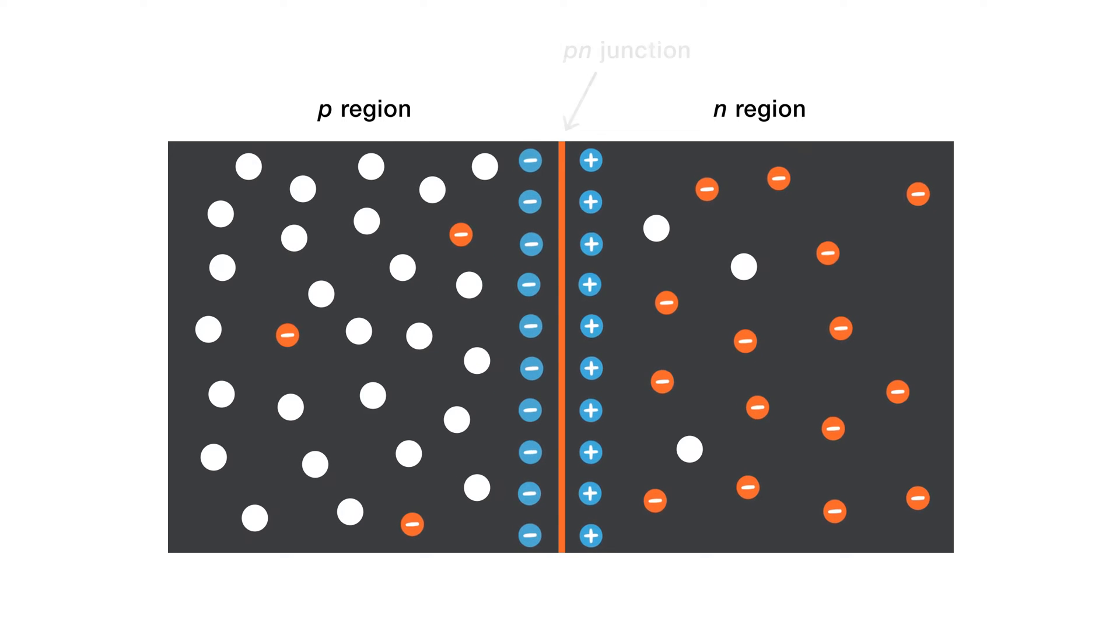These two layers of positive and negative charges create a region where charge carriers are depleted. This region is called, fittingly, the depletion region.